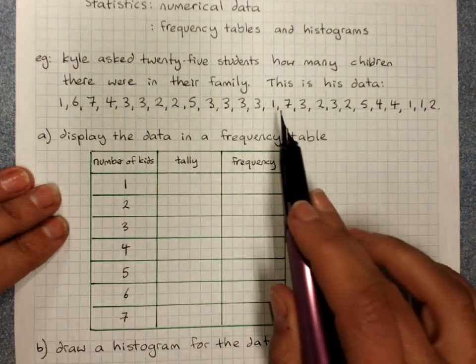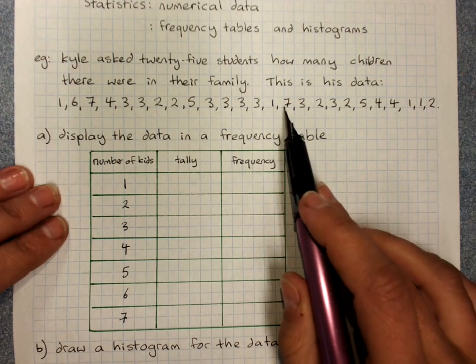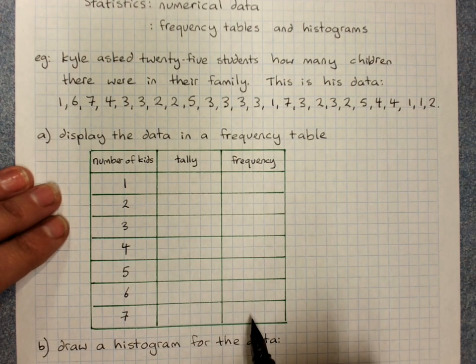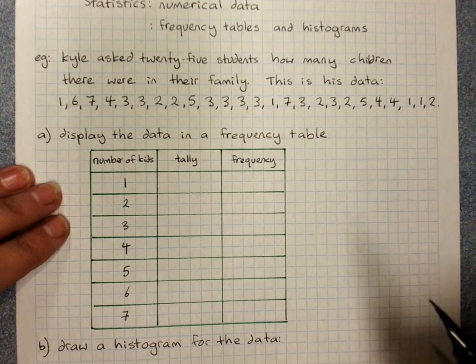So only one person said that there's seven kids in their family. That would be me. And so we know there'll be a frequency of one. One person had seven kids in their family.